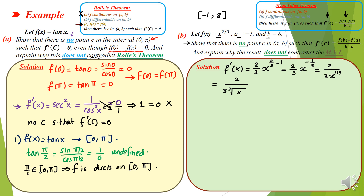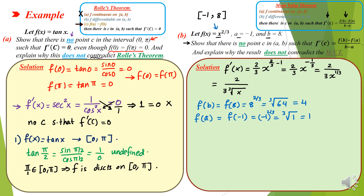Next, we compute [f(b) − f(a)] / (b − a). f(8) = 8^(2/3) = ∛64² = 4 (since ∛8 = 2, so 2² = 4). Wait — 8^(2/3) = (∛8)² = 4. Then f(−1) = (−1)^(2/3) = ∛(−1)² = ∛1 = 1. So [f(b) − f(a)] / (b − a) = (4 − 1) / (8 − (−1)) = 3/9 = 1/3.